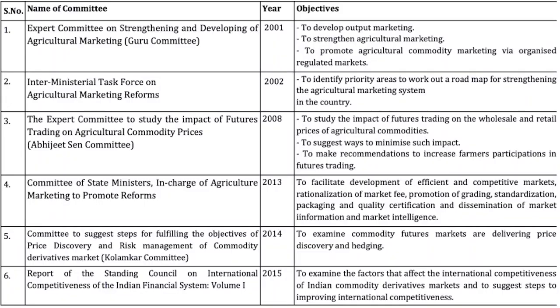Consequently, there is a lot of non-transparent price discovery and large price dispersion, along with interstate barriers because each state has a different APMC. A series of committees reviewed this. The national agriculture policy in the early 2000s called for a rainbow revolution and started making space for private players, with many states adapting their laws. But I want to focus on the last development, which is ENAM — the idea of having an electronic national agriculture market.